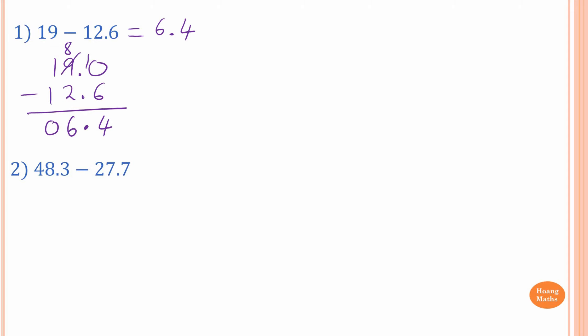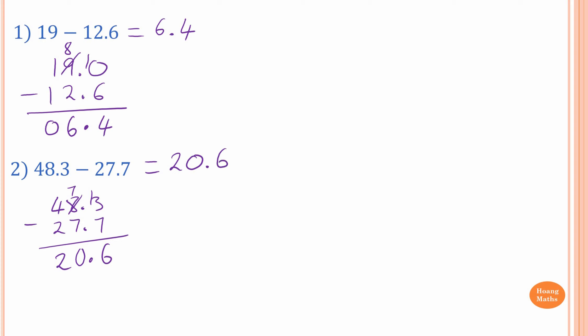Next one: 48.3 minus 27.7. So just write 48.3 minus 27.7. Now 3 cannot take away 7, so you borrow 1 from 8 — that gives me 7, and 3 becomes 13. 10 take away 7 is 3, and 3 is 6. So put a dot down, and then 7 minus 7 is 0, and 4 minus 2 is 2. The answer is 20.6.